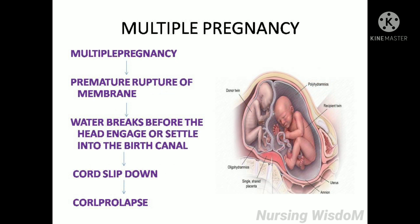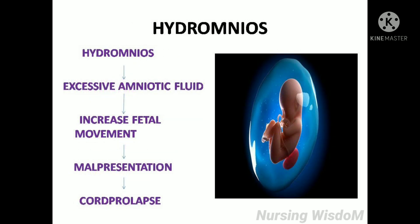In multiple pregnancy, premature rupture of membranes will mostly occur. That means the water breaks before the head engages or settles into the birth canal, which causes slippage of the cord downward and leads to cord prolapse. In hydramnios, excessive amniotic fluid will be present, causing increased fetal movement, which leads to malpresentation and cord prolapse.